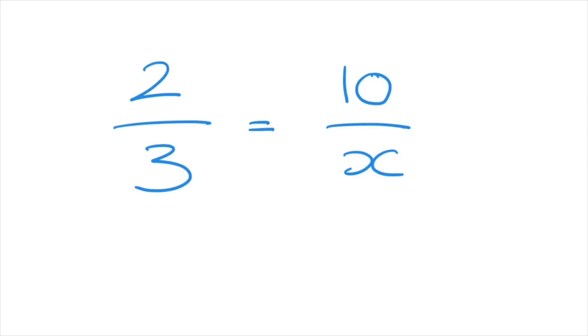We're given 2 over 3, or 2 thirds, and we need to find its equivalent fraction whose numerator is 10, but its denominator is unknown.